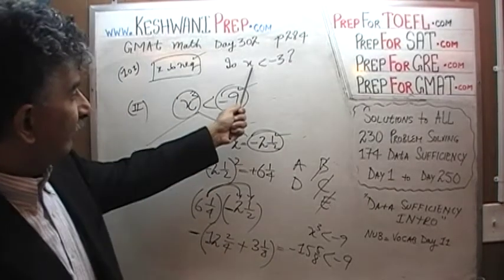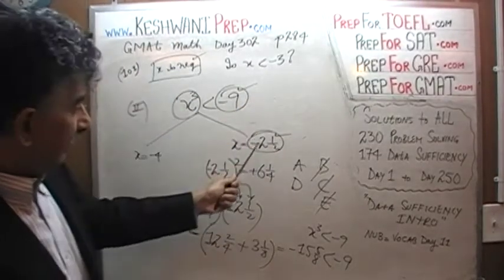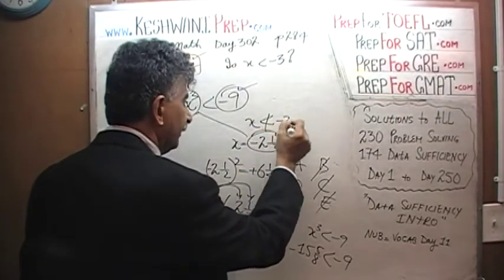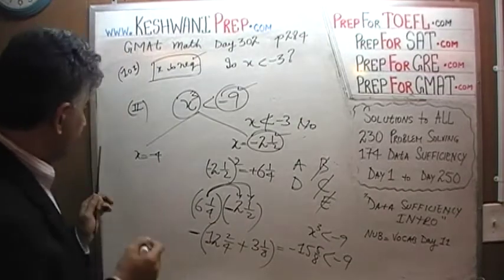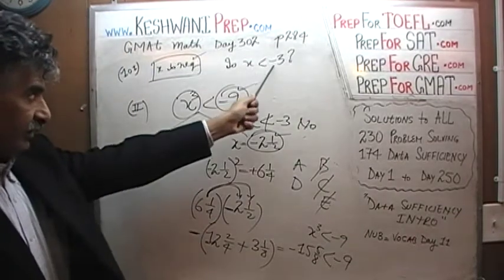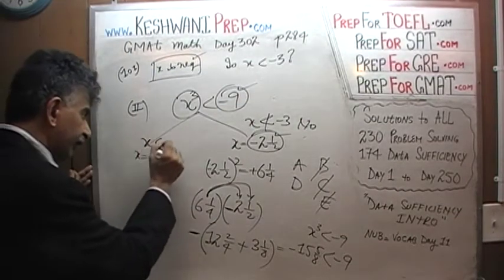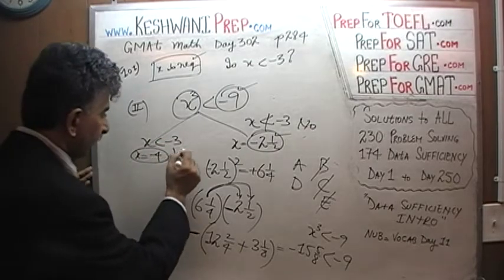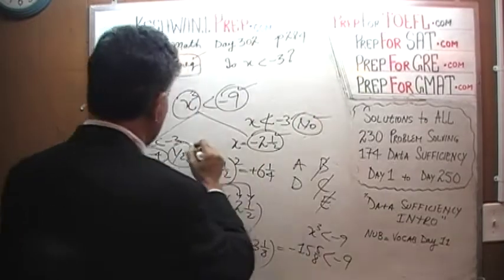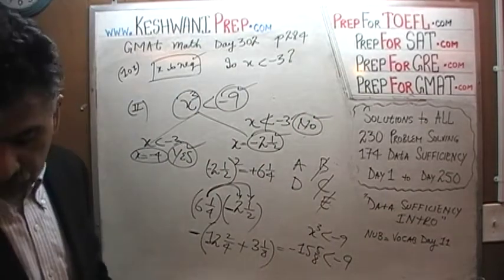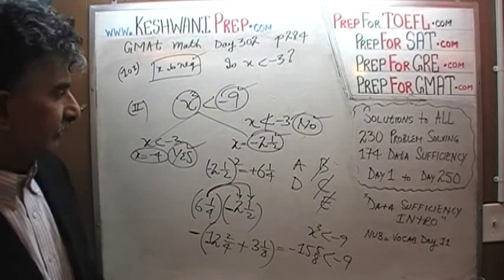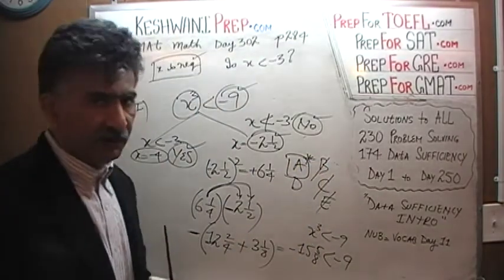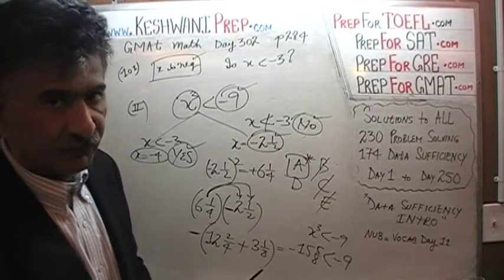So in this case — is X less than negative 3? When X is negative 2.5, the answer is no. But when X is negative 4, the answer is yes. We get two different answers, so the second statement does not do the job. The second statement is not sufficient. The answer is A — only the first statement by itself does the job.